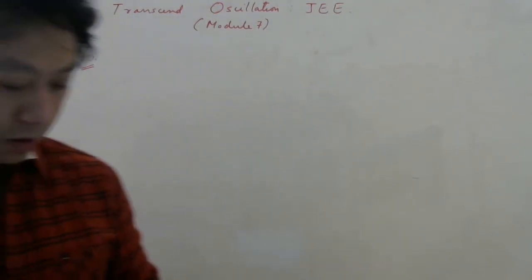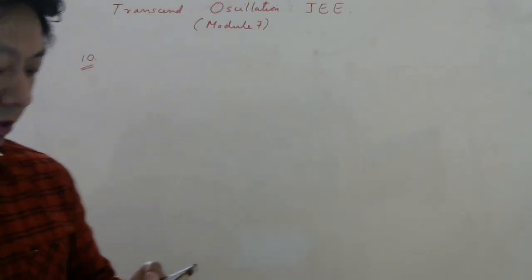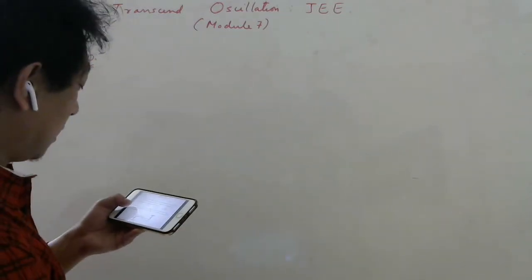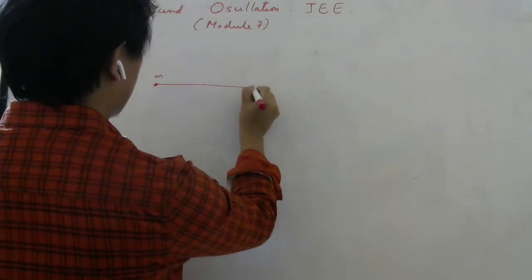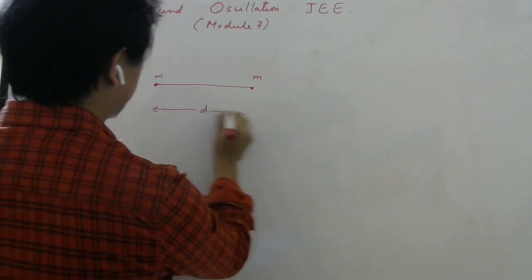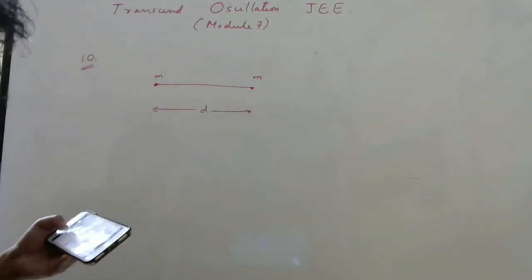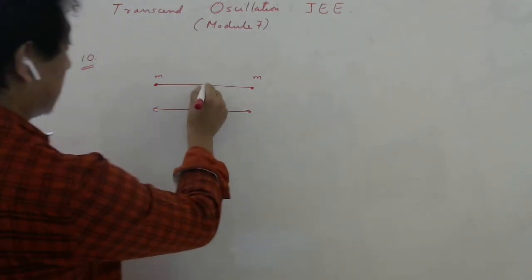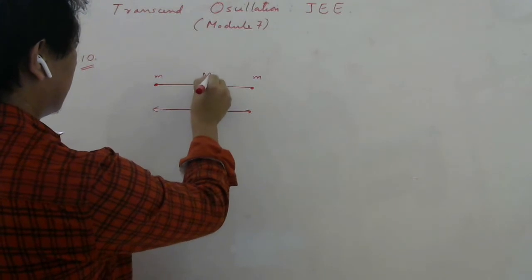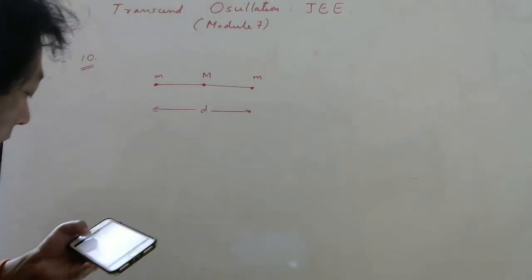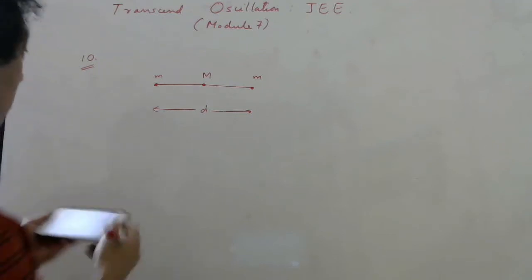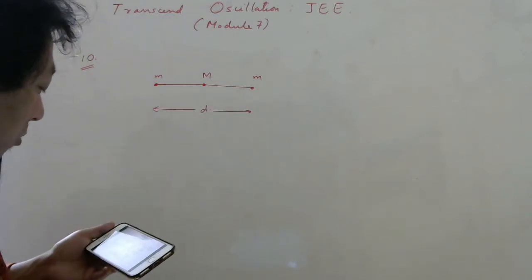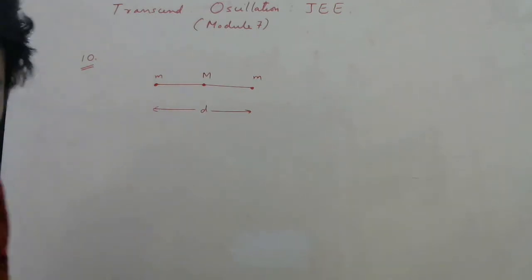Hi students, let us continue with the solutions of JEE Transsome material. Question number 10: two point masses small m are held in place a distance d apart. Another point mass capital M is midway between them. If M is slightly displaced perpendicular to the line connecting the two fixed masses and then released, what will be the angular frequency of simple harmonic oscillation of capital M?